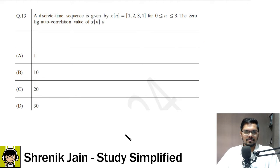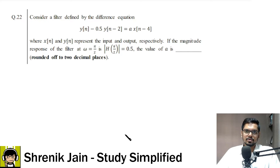First question in front of screen from autocorrelation. Easy question. Pause the video, try by yourself, and then go to the next question. Again, easy question from DTFT. Pause the video, try.